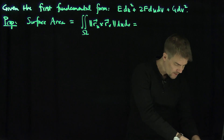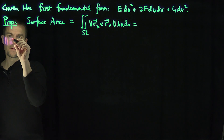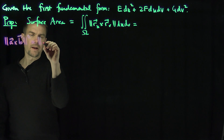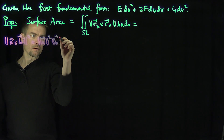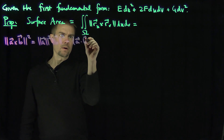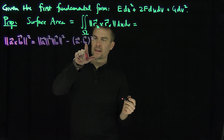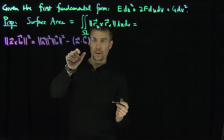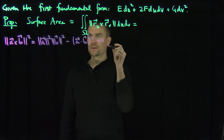We're going to use this vector identity: the length of a cross b squared equals the length of a squared times the length of b squared, minus the quantity a dot b squared. This follows from the fact that |a cross b| = |a||b| sin θ, so we get |a|²|b|²(1 - cos²θ) = |a|²|b|² sin²θ.